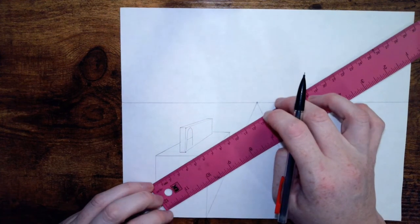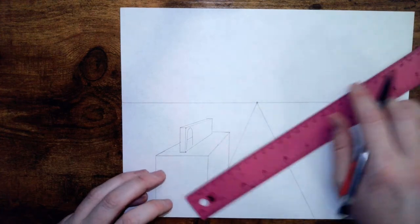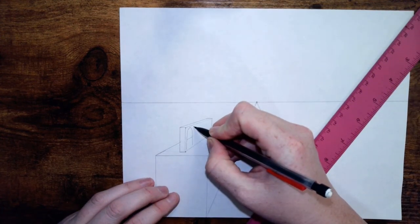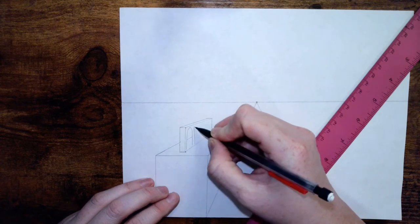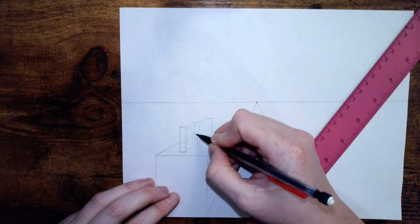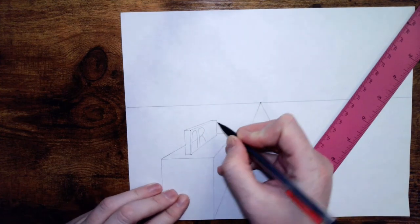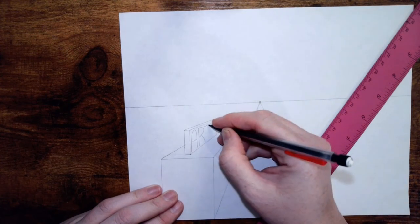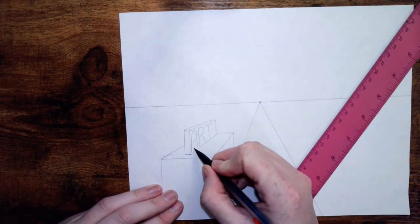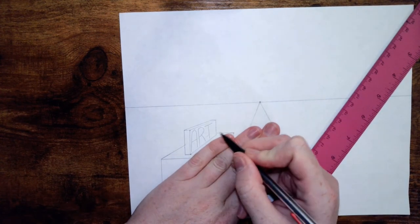So the cross part of the A should go to the vanishing point. We put an R, should stop at the same spot. And then we put T. See how it's getting smaller as it goes back? A-R-T.